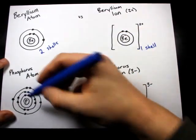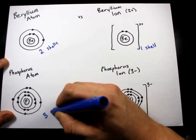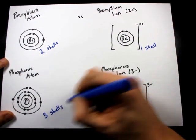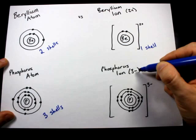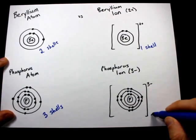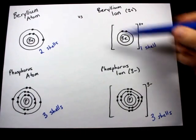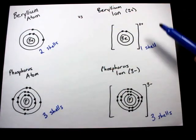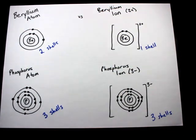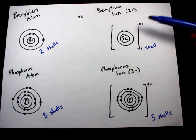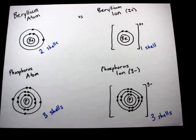Phosphorus on its own actually has three occupied shells, and when you complete the octet as you do for non-metals, you actually preserve the number of shells. It's only the metals that are changing the number of shells when you create the positive charges because you're losing electrons there.